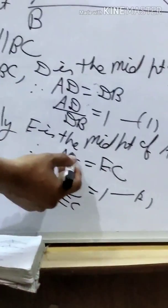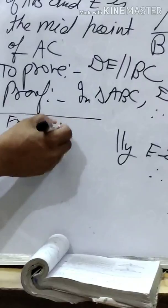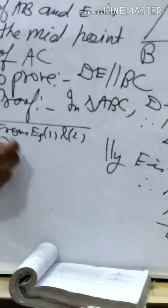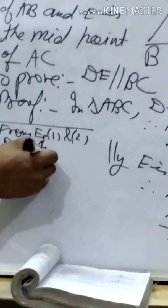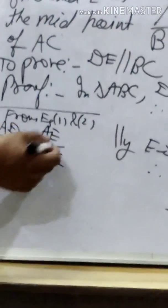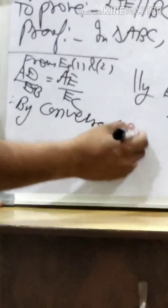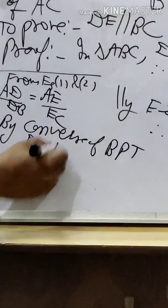From equations 1 and 2: AD upon DB equals 1 and AE upon EC equals 1, so AD upon DB equals AE upon EC. Since the two ratios are equal, by the converse of BPT, DE is parallel to BC. Hence proved. This is a simple application of the converse of BPT.